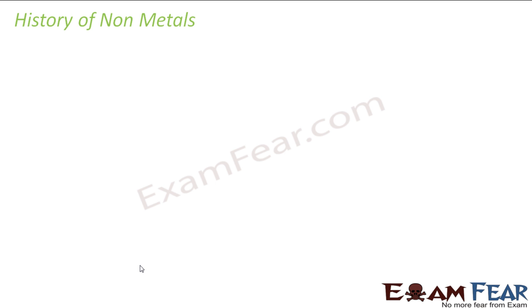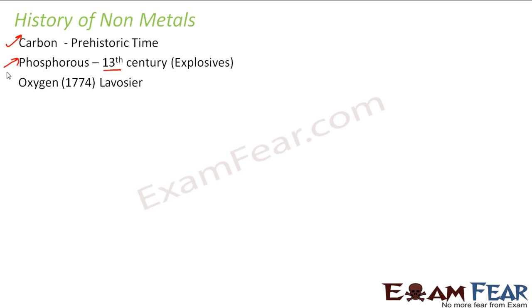Before we go into the physical property of non-metals, let's have a brief history of non-metals. Metals, if you see, were found in 6,000 B.C. It was found very early but non-metals are not like that. Carbon is the only metal which was found in the prehistoric time and that too in the form of coal. After that, it's all 13th century. There is no non-metal which was found in B.C. The only one was carbon. Phosphorus was found in 1300 century and that it was used to make explosives. And after that, the next metal that was found or given name was oxygen.